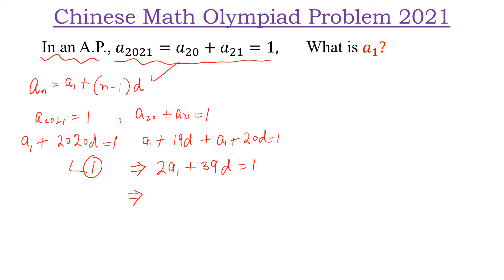To find D, we can write 39D is equal to 1 minus 2A₁ and D is equal to (1 minus 2A₁) divided by 39. Let this be equation 2.